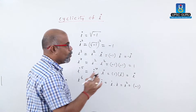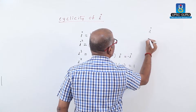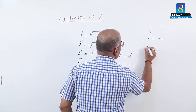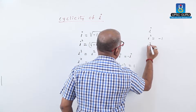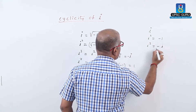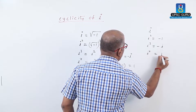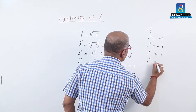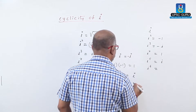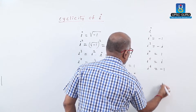So summarizing: i equals i, i square equals minus 1, i cube equals minus i, i raise to 4 equals 1, i raise to 5 equals i again, i raise to 6 equals minus 1, and so on.